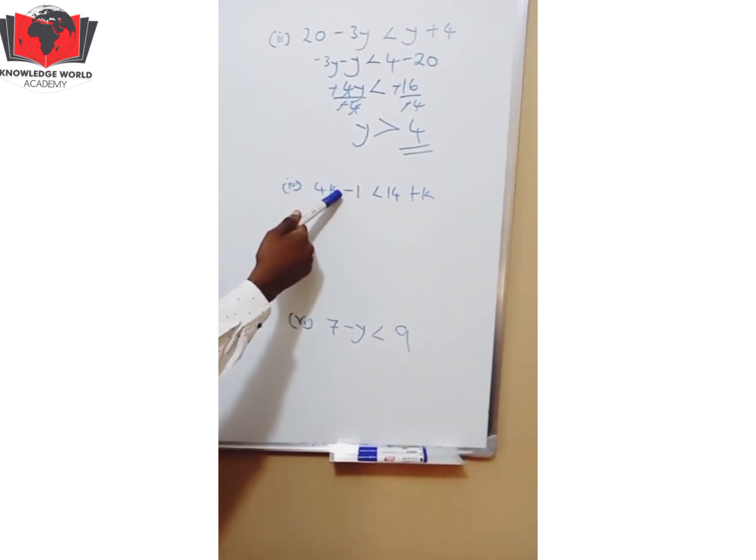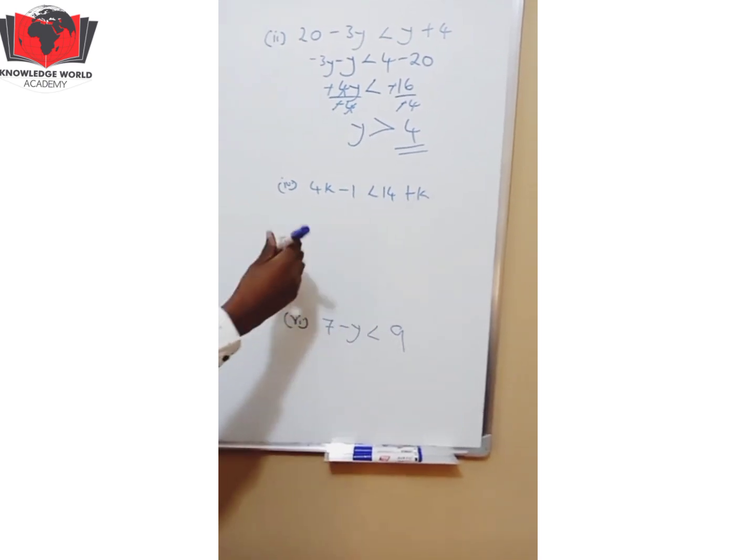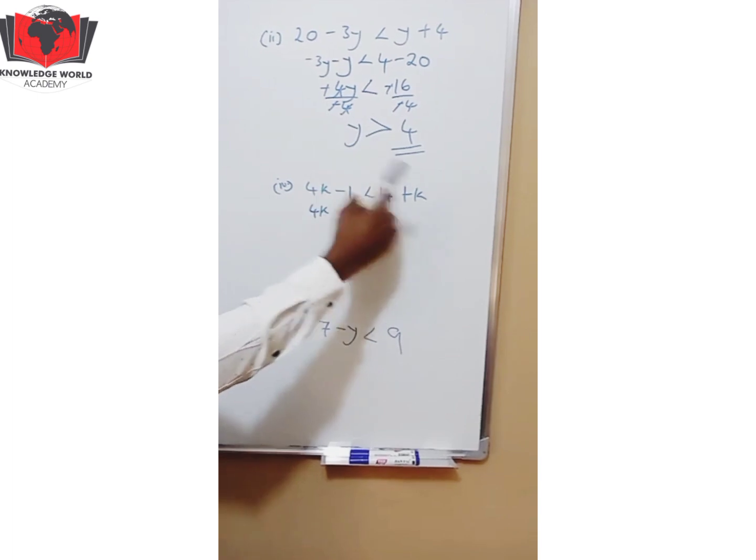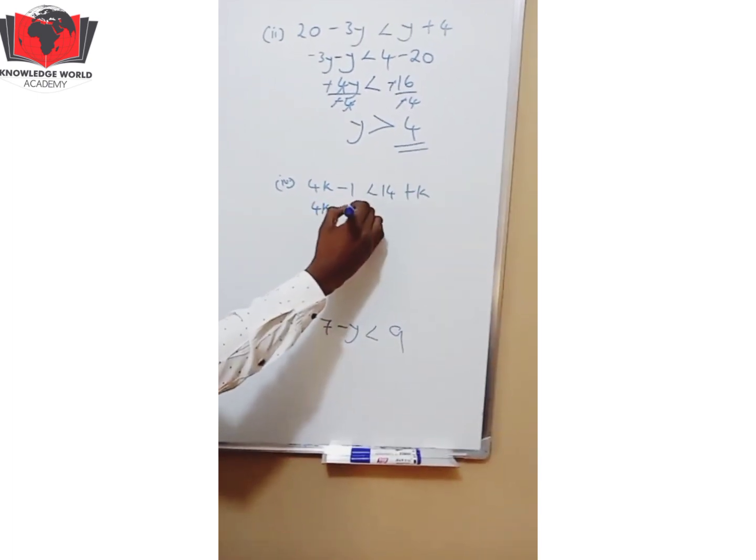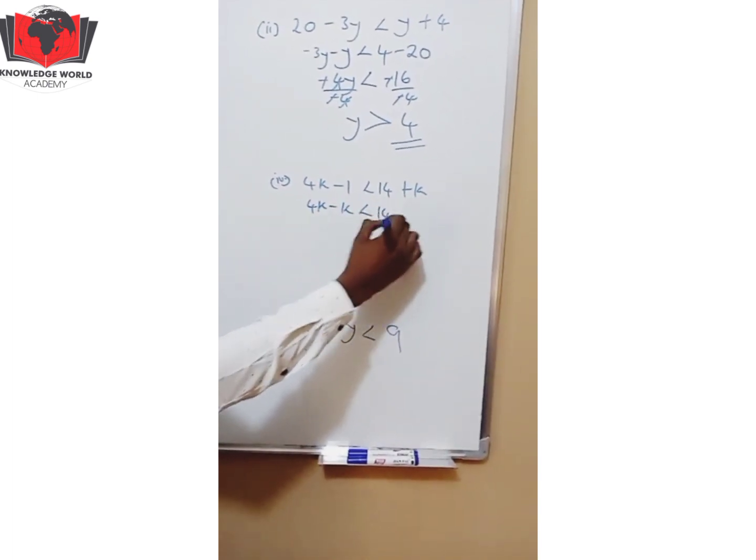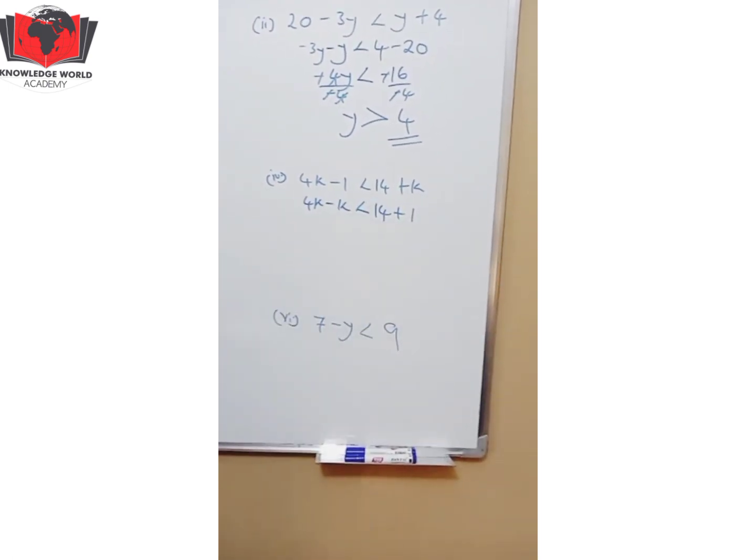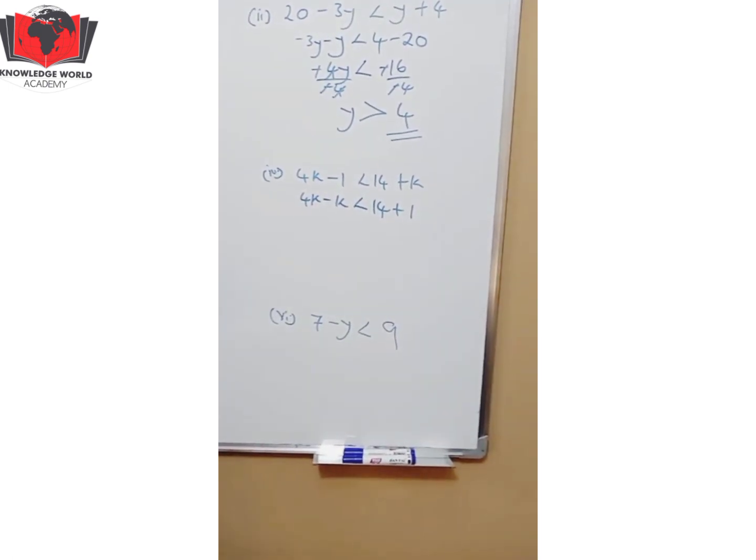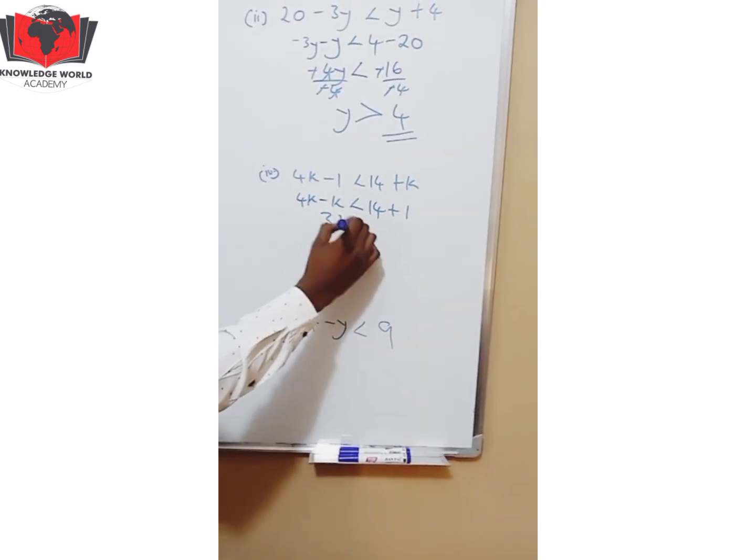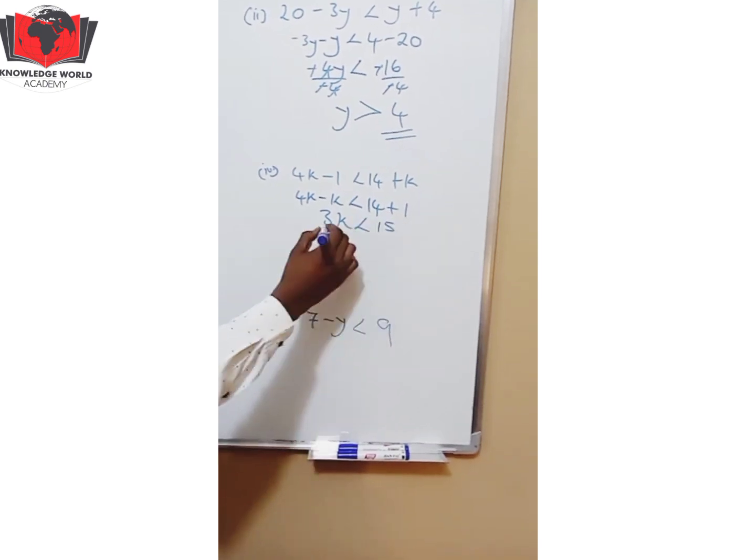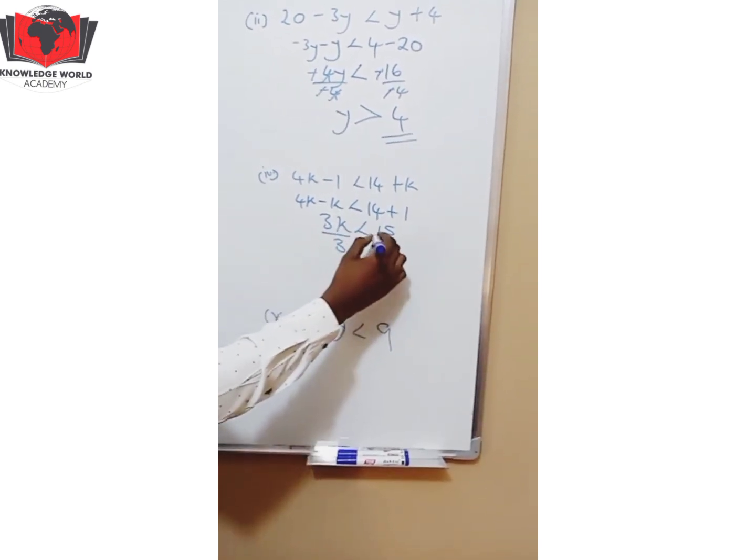We have 4k - 1 < 14 + k. What do you do? Group the like terms. So 4k, this k goes this side -k. Less than 14. This is -1 goes this side +1. You have to be very careful with the signs. So 4k - k will give you 3k. Less than 14 + 1, 15. Look at you. You solve it. Look at you.